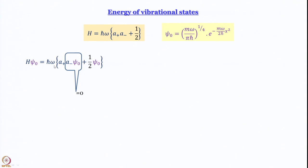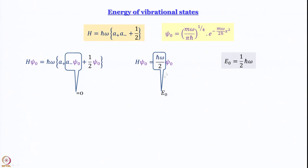The surviving term gives H·ψ_0 = (ℏω/2)·ψ_0. The eigenvalue here is ℏω/2, and that is E_0 — the energy of the lowest vibrational state. ψ_0 has an energy of (1/2)ℏω. This, as mentioned in our introduction, is called the zero-point energy. This is the smallest energy a quantum harmonic oscillator can have — it can never be 0, because if it were, it would violate the uncertainty principle.